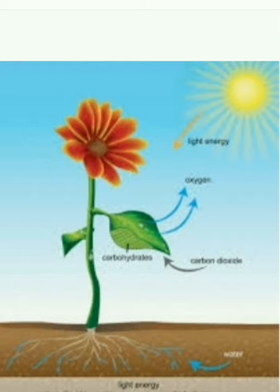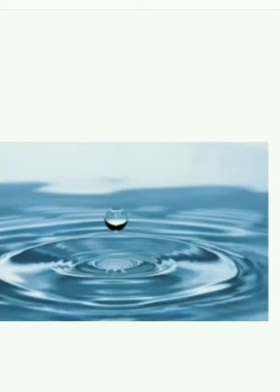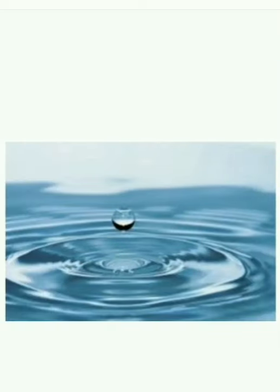The water which is essential for living beings is available on the Earth. The water which is essential for living beings is available through the process of water cycle. What is the main source of water? Rain is the main source of water.